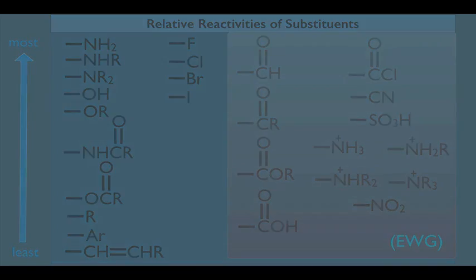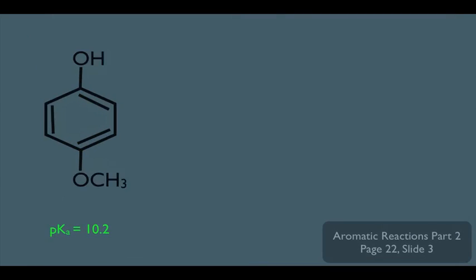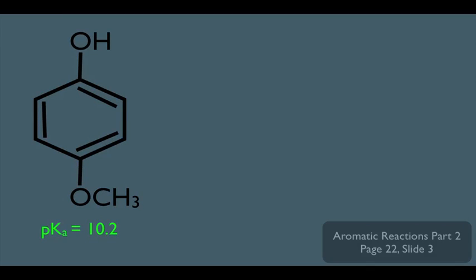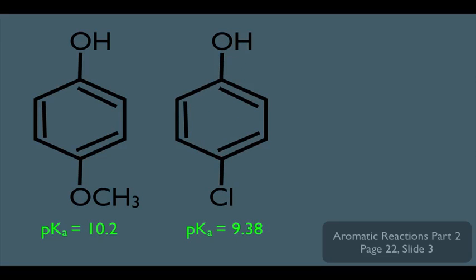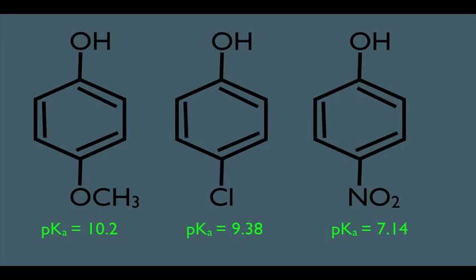Take a look at this. This molecule right here has a pKa of 10.2. Notice it has an OH group, but it also has the OCH3 group, which happens to be an overall electron donator. Comparing it to the molecule on the right, notice it has a lower pKa because Cl is an overall electron withdrawing group, making it more acidic and therefore having a lower pKa. And notice what happens when we put an even stronger electron withdrawing group on benzene, in this case NO2 — the pKa drops even more to 7.14, making the molecule on the right the most acidic out of the three.